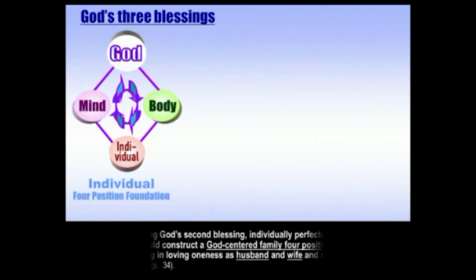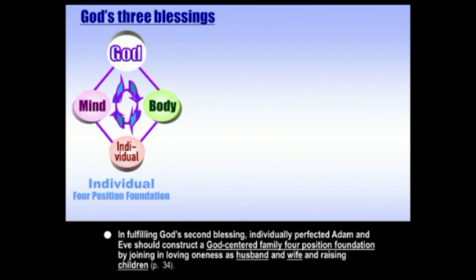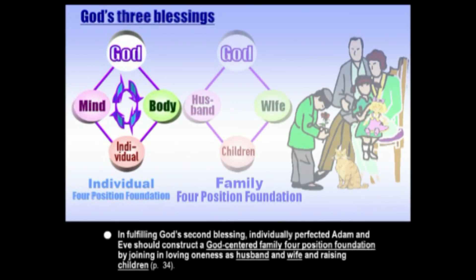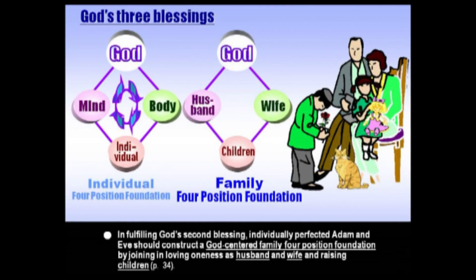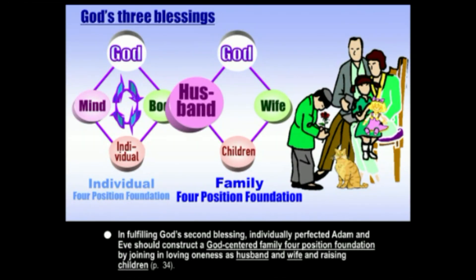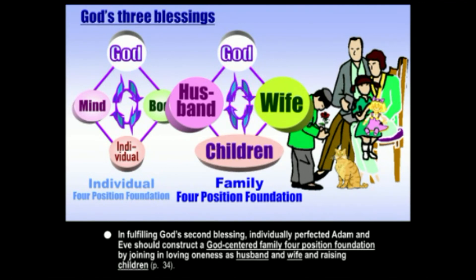For the second great blessing, individually perfected man — Adam originally — and woman, Eve, should create a God-centered family four-position foundation. They would join together in loving oneness as husband and wife, and together they would raise children. This four-position diagram is the foundation for describing this dynamic relationship of love in the family.